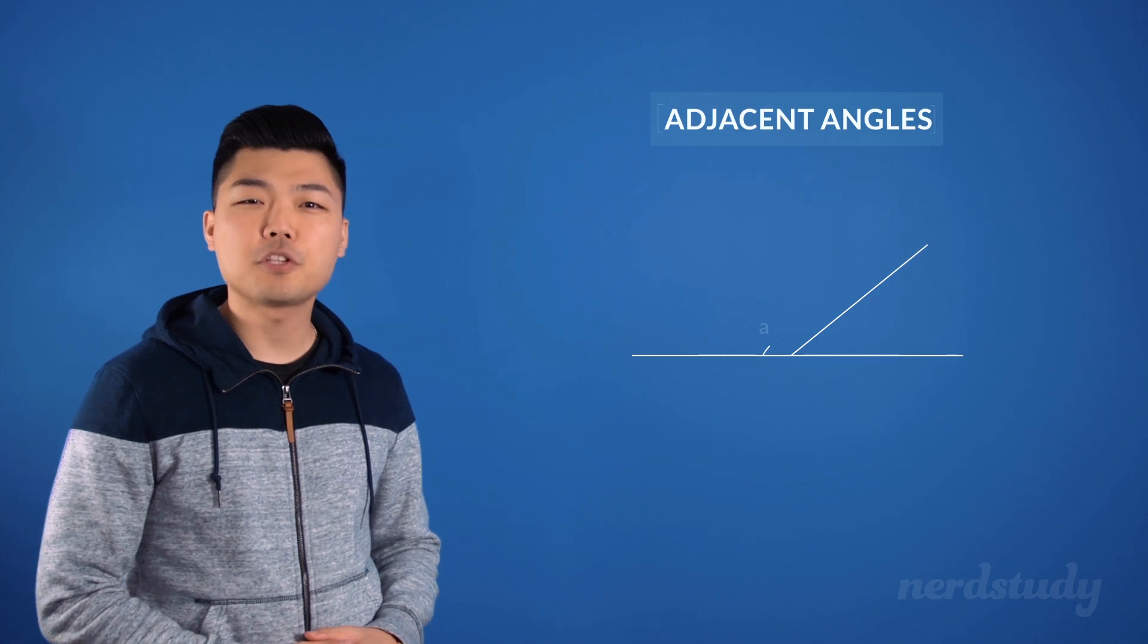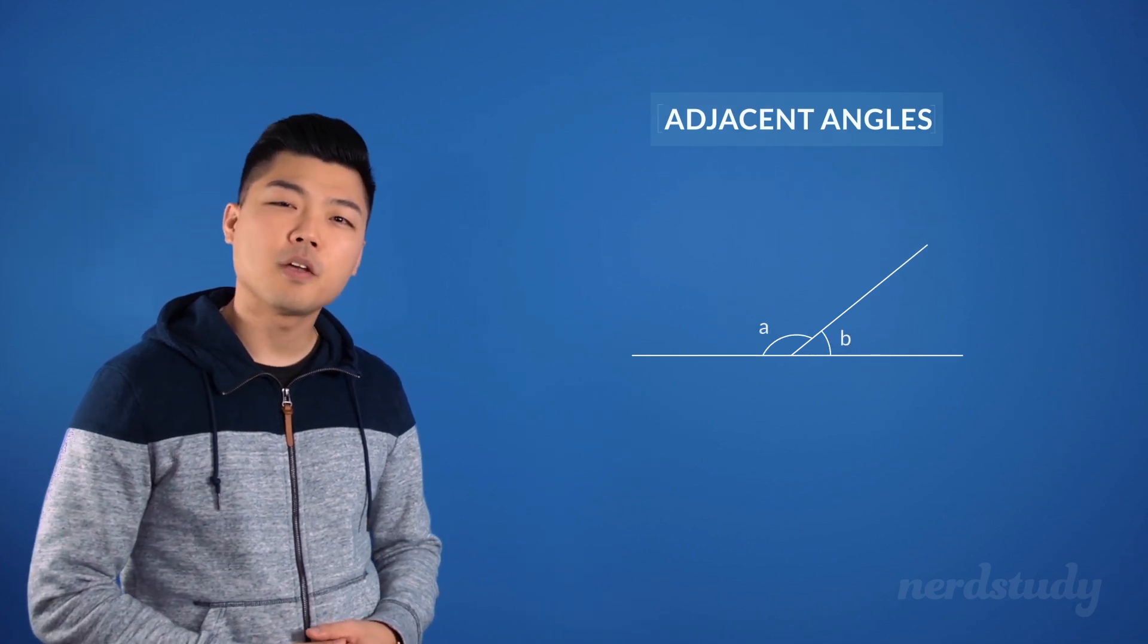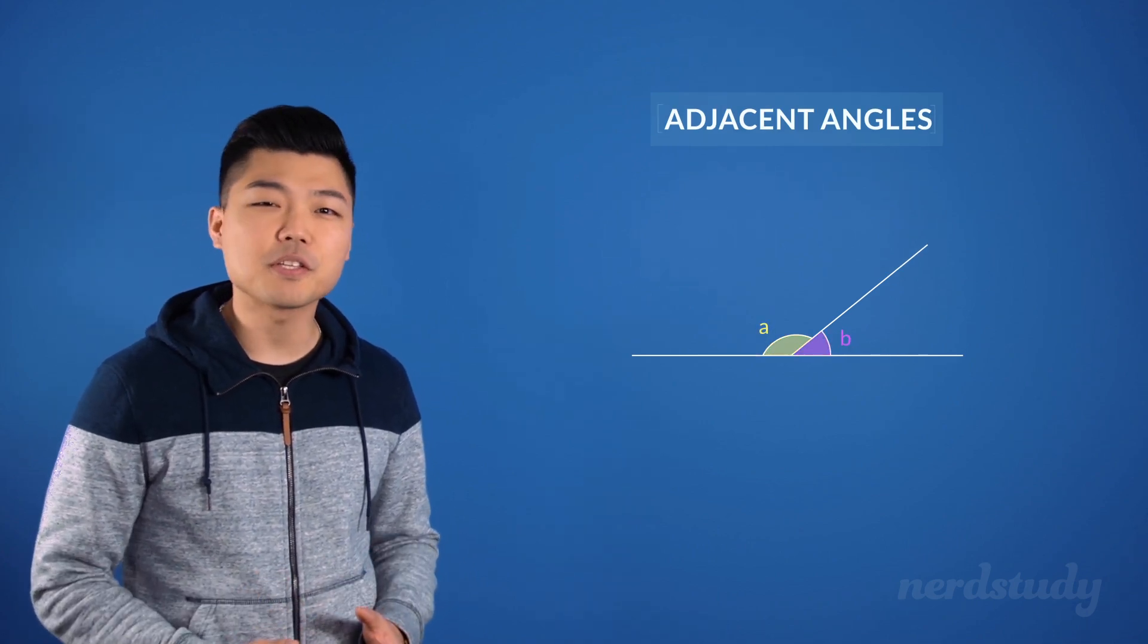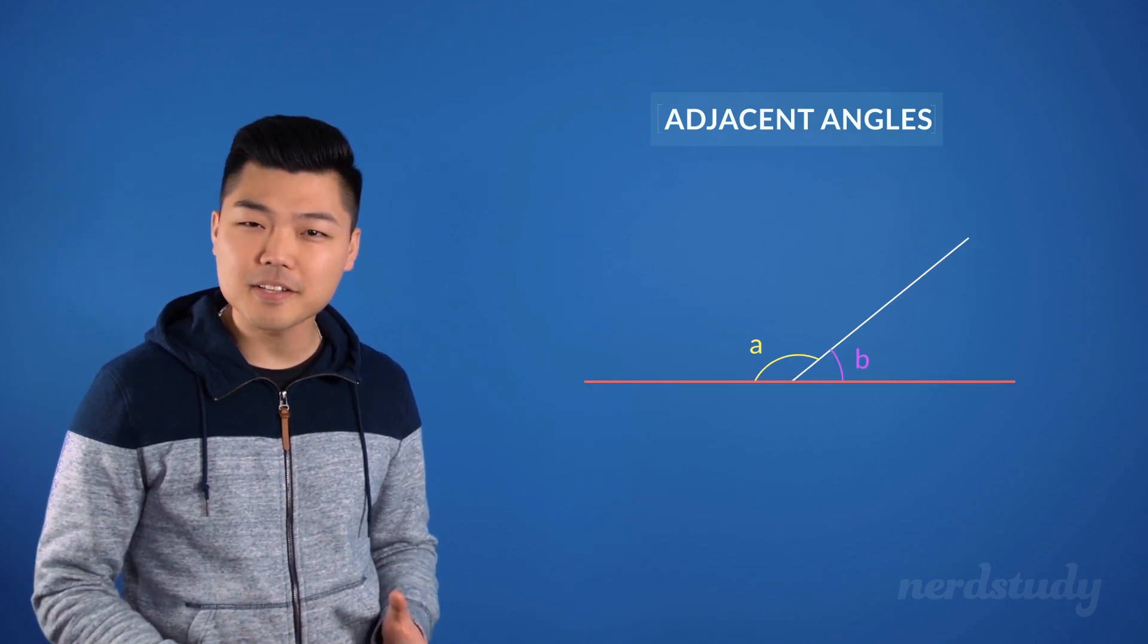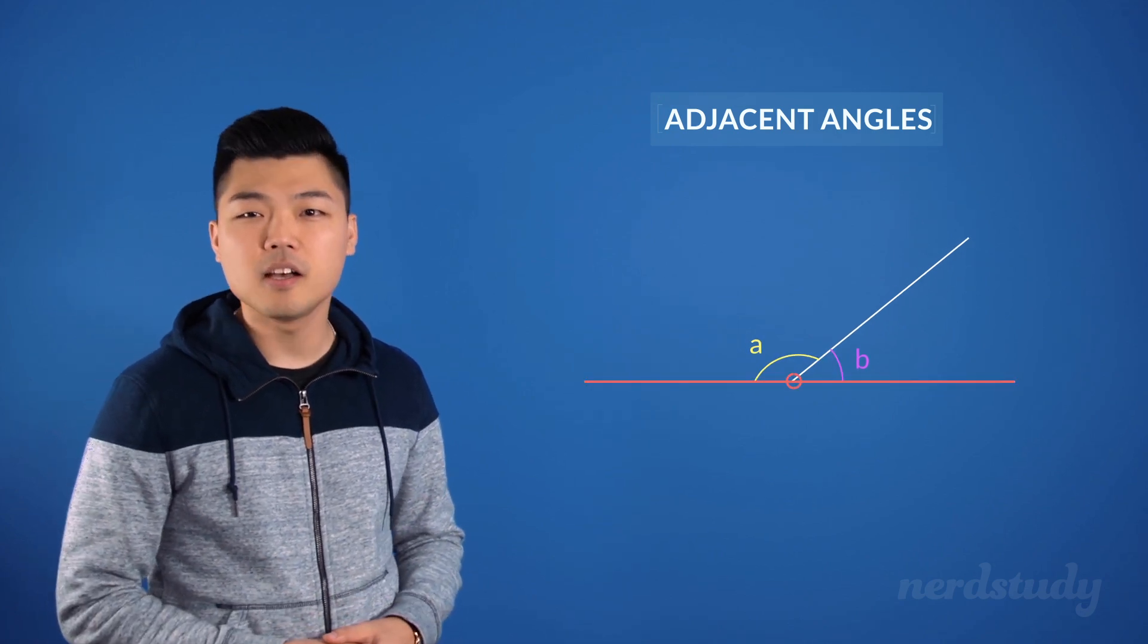Here's an example of two adjacent angles. Two angles are considered adjacent when they have a common side and a common vertex, like so.